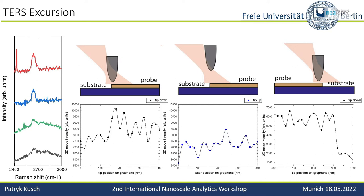A very nice secondary proof comes from looking at the noise ratio. With the tip away, the noise level is pretty constant. When the tip arrives at the graphene, the signal increases but so does the noise. Intuitively this makes sense — we have near-field signal, the graphene is slightly tilted, and when the tip is scanning we will have a stronger modulation of the background.